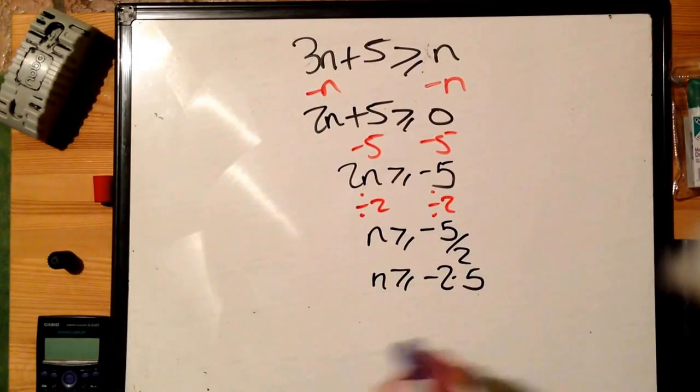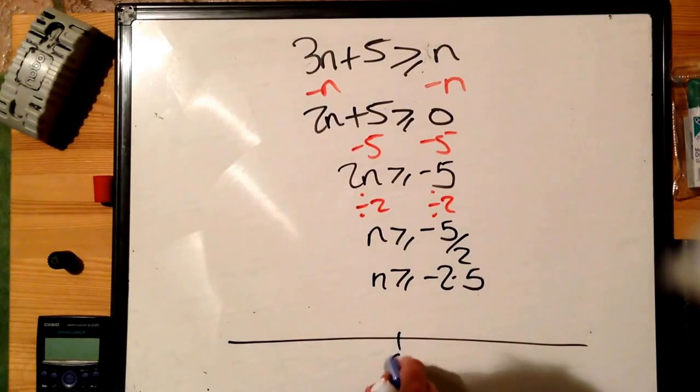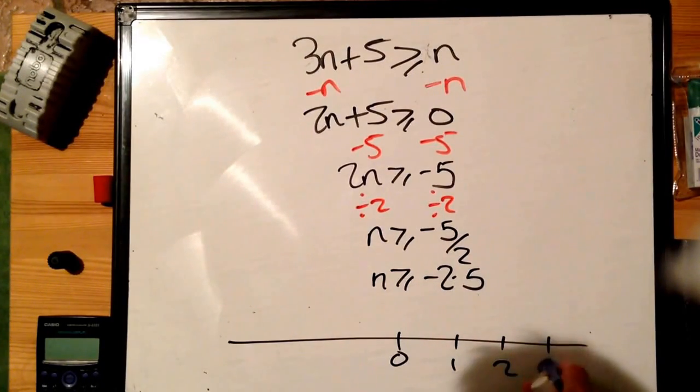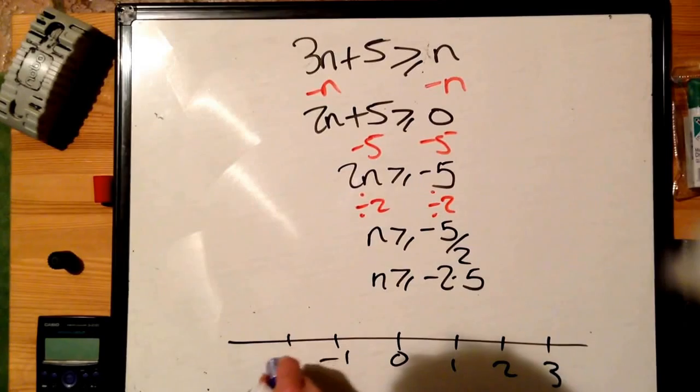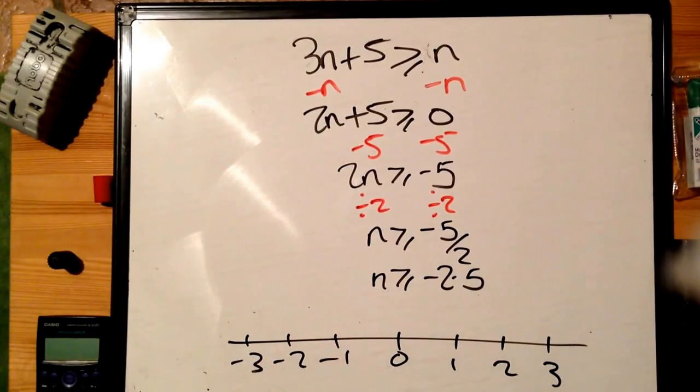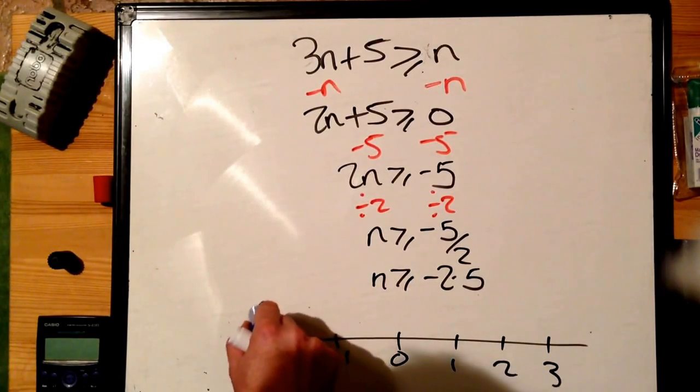Now, once you've got that, to show this on a number line, we draw the number line out. Often in an exam that will be given to you, so you don't need to do this. If it doesn't, sketch it out very quickly. Minus 2.5 is roughly there.